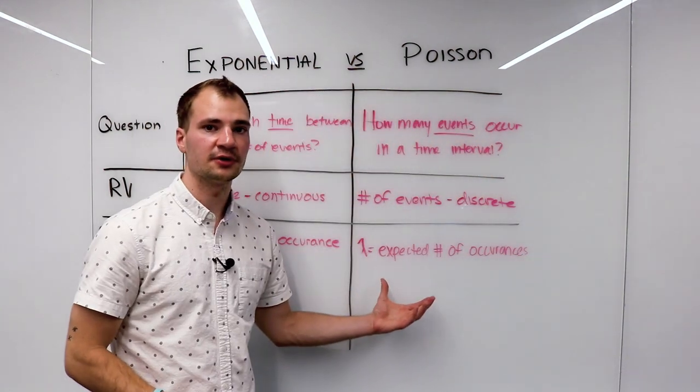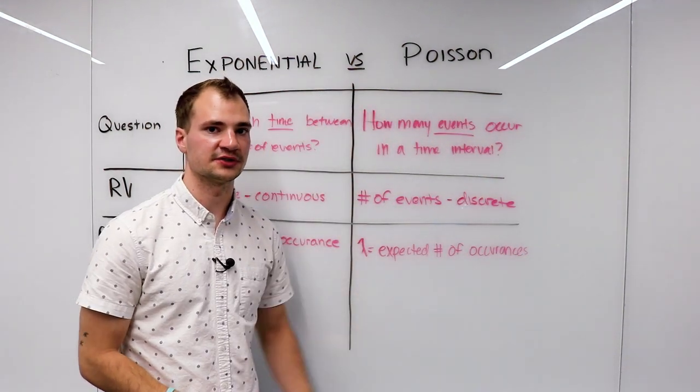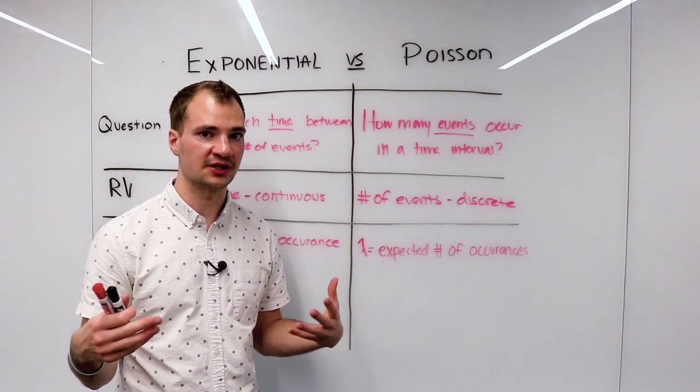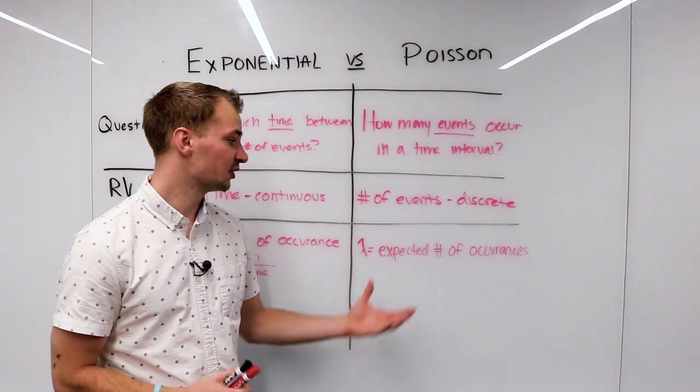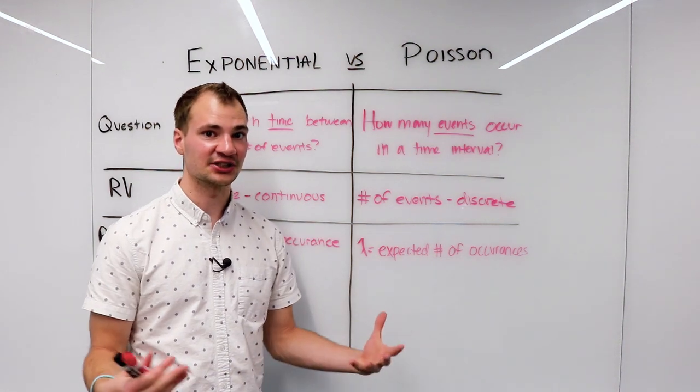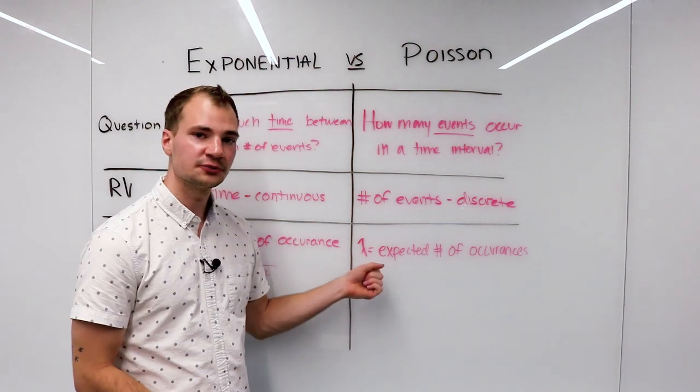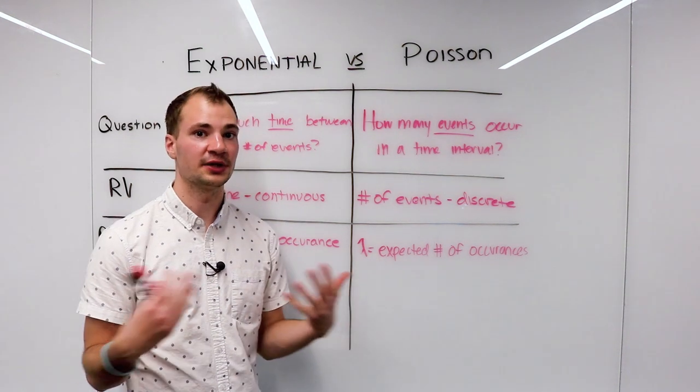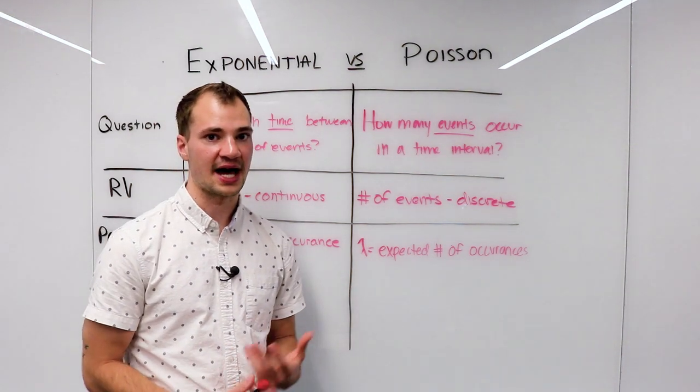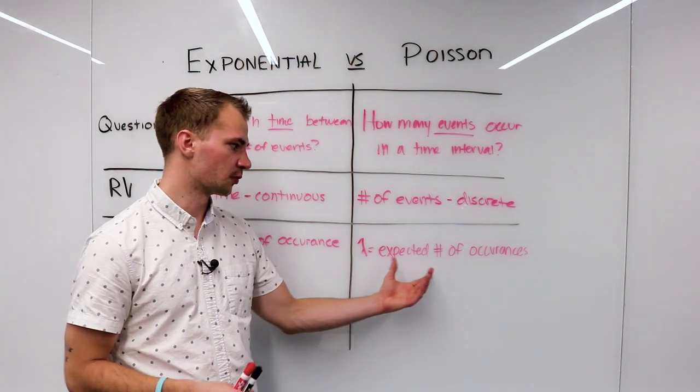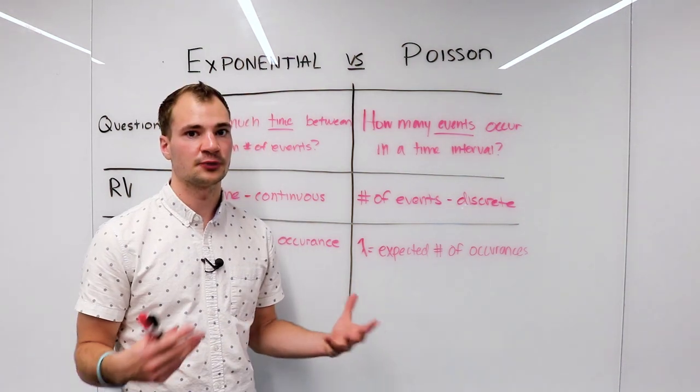So our parameter is the expected number of occurrences. And if you remember back to the three principles we talked about of a Poisson process, the first is that the expected number of occurrences, or the average, is actually known. So the average, maybe we measure that empirically, that's what this lambda is—what we expect the number of occurrences to happen in that time interval. So the average number of occurrences, in other words, the expected, actually represents the entire distribution.